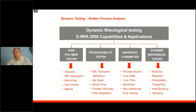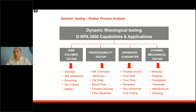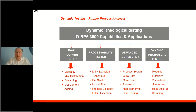Today I want to report a little bit about dynamic rubber testing. Rubber process analyzers have become state-of-the-art equipment not only in R&D but also in quality control in rubber factories. The application area of rubber process analyzers can be classified in four different segments, utilizing the RPA as a raw polymer tester.